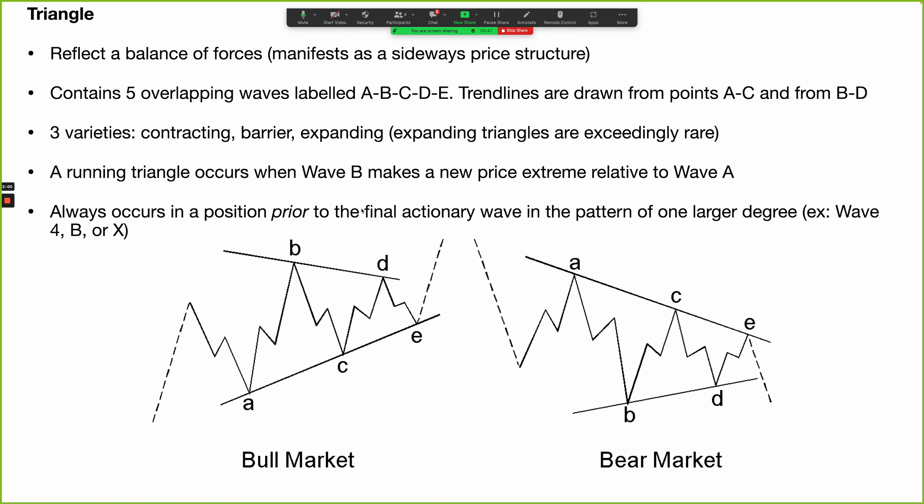Triangles always occur in a position prior to the final actionary wave in the pattern of one larger degree. This is an extremely important point because it tells us specifically where triangles can and cannot take shape. If you think you're tracking an unfolding impulse wave — one, two, three, four, five — and you spot a triangle in wave two, your count is either wrong, or there is a triangle in that second wave but it's not the entirety of the correction — maybe it's a B wave triangle. If you're convinced it is a triangle, you have to abandon that one-two-three-four-five impulsive count and shift to a corrective count.